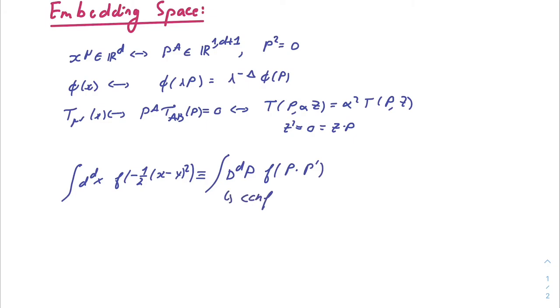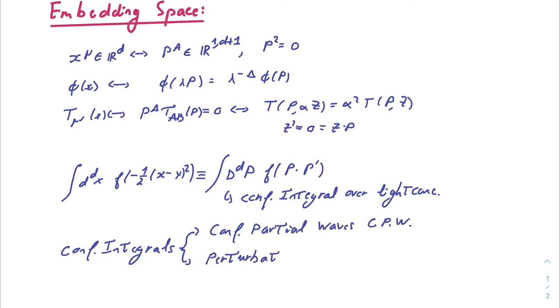Likewise, we can consider integrals over all of the space of conformal weight d functions, which are mapped in the embedding space to conformally invariant integrals over the light cone, which are rather more easy to compute. We will see actually that these conformal integrals map both to the conformal partial wave expansion and to perturbative expansion in the marginal deformation of your theory.